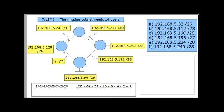Coming off the bottom router there's a /26 subnet, and off another router another /26 subnet. Then in between two routers there's an Ethernet network — notice the straight line connecting them, not a lightning bolt — and this is the missing subnet we have to find. All of these networks are subnets of the 192.168.5.0 network, using variable-length subnet masks: /30, /28, and /26 sizes.